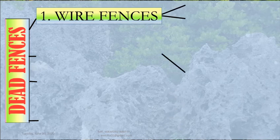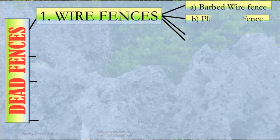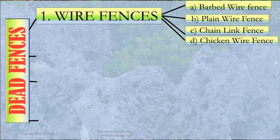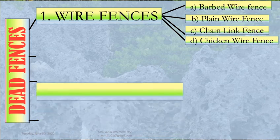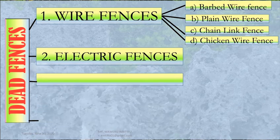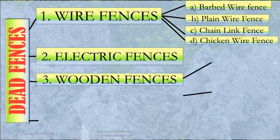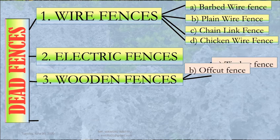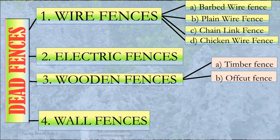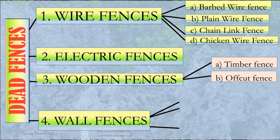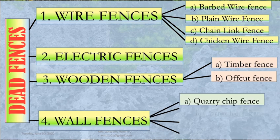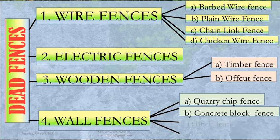Number one, wire fences. There are several types of wire fences, which include barbed wire fences, plain wire fences, chain link fences, and chicken wire fences. Number two, electric fences. Number three, wooden fences, which are divided into two: timber fences and offcut fences. Number four, wall fences, which include quarry chip fences, concrete block fences, brick fences, and stone fences.